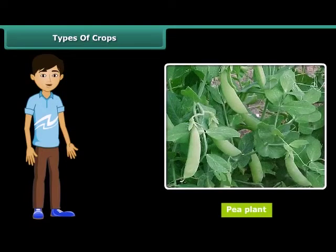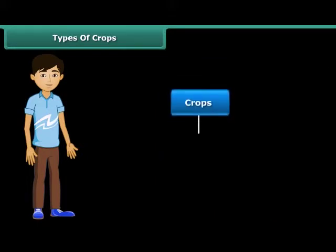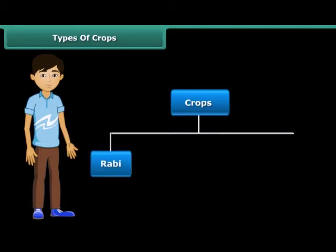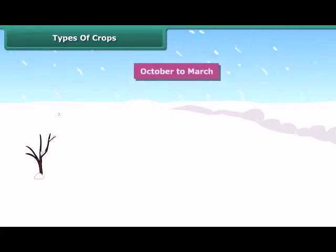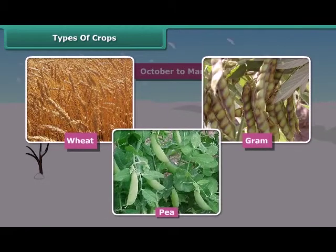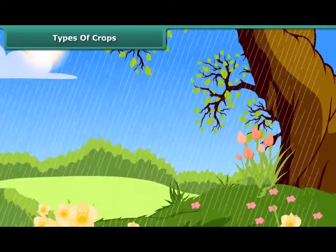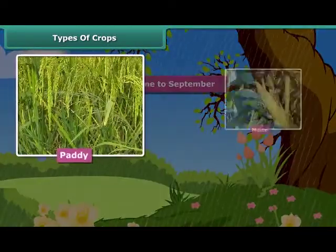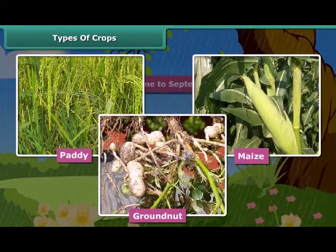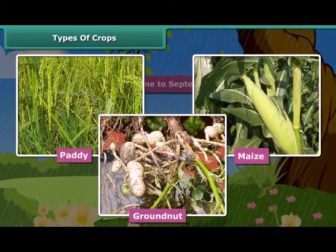If you wish to grow a pea plant in the hot season, you can't do it. In India, crops are broadly classified into two categories on the basis of the season they are grown in — Rabi crops and Kharif crops. Rabi crops are usually grown in the winter season from October to March. Wheat, gram and peas are examples of Rabi crops. Kharif crops are usually sown in the rainy season, generally from June to September. Paddy, maize, groundnut, etc. are some common examples of Kharif crops. To grow crops, various activities are performed, which are known as agricultural practices.